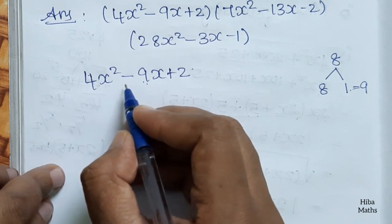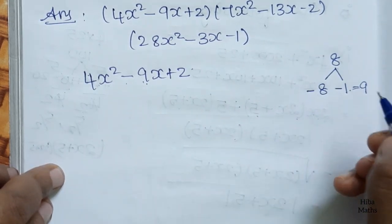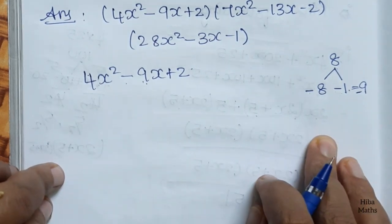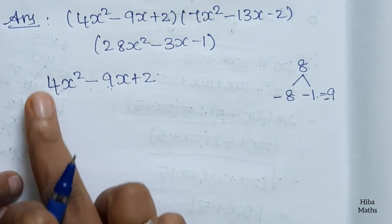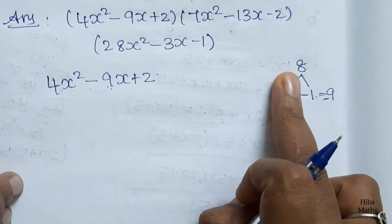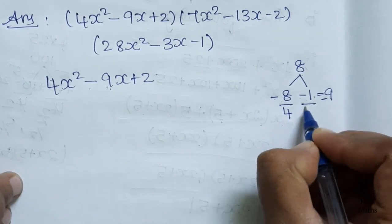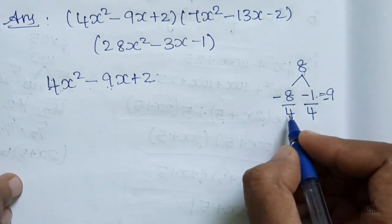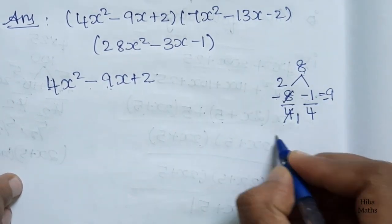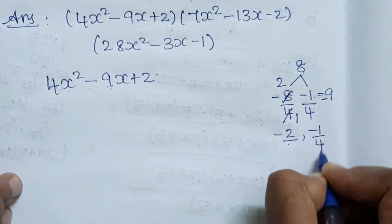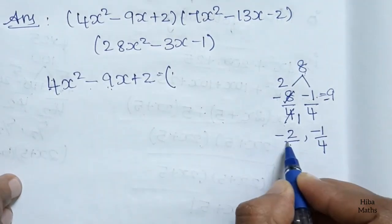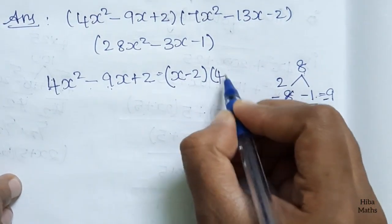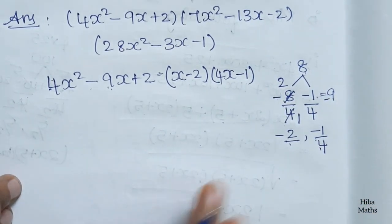Both signs are minus, so minus 8 minus 1 gives minus 9. For 4x² minus 9x plus 2, splitting: we divide 4 getting roots minus 2 and minus 1 by 4. Factorizing gives (x minus 2)(4x minus 1).